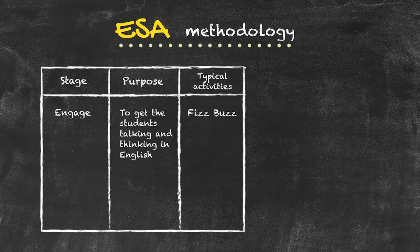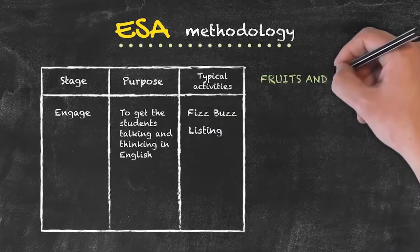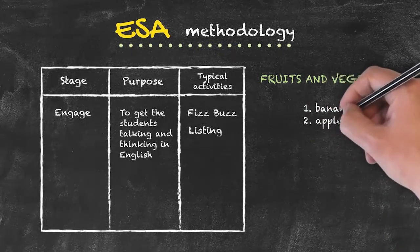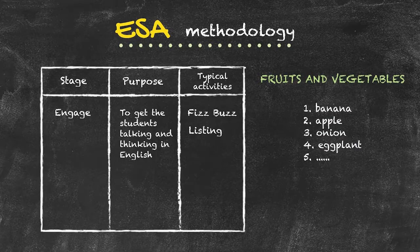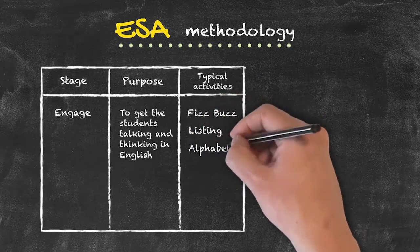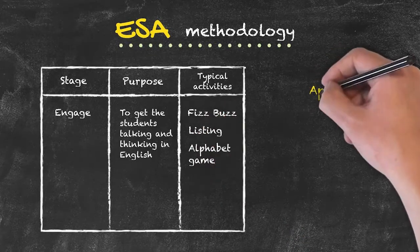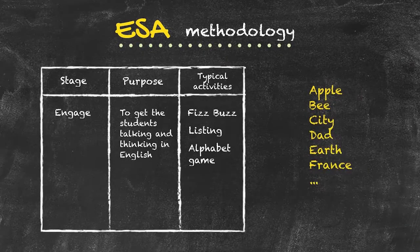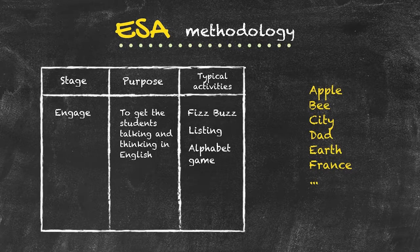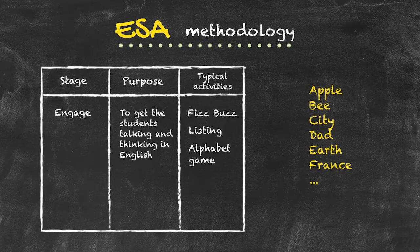A second idea is to get students to create lists. We give them a topic — for example, fruit and vegetables — and they go around the class producing a list of various things. Another idea is an alphabet game, where they have to create nouns following the letters of the alphabet. Each of these ideas is purely to get students talking and thinking in English. They are interactive, and we need to ensure that everyone in the class has said something by the end of our Engage phase.